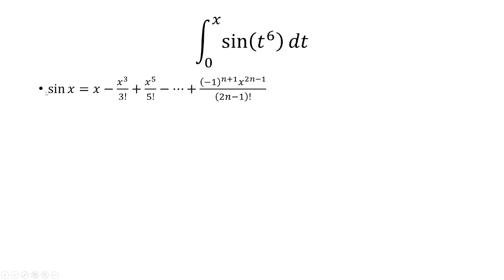Starting off, we need to have sine of x. Sine of x is x minus x cubed over 3 factorial plus x to the 5th over 5 factorial, and then all the way up to negative 1 to the n plus 1st power times x to the 2n minus 1 over 2n minus 1 factorial.